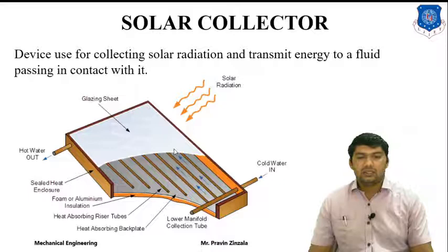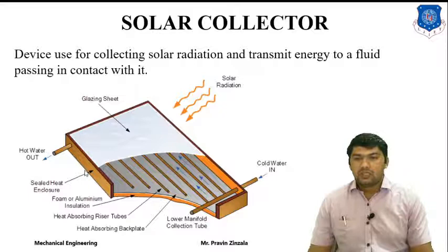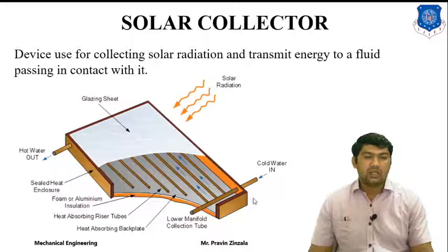These are also the components of a solar collector. The first component is a glazing sheet, which we can also call a transparent cover. Then a sealed enclosure is used to minimize losses. Different materials are used for the absorber and different types of fluid are selected according to the requirement and availability.